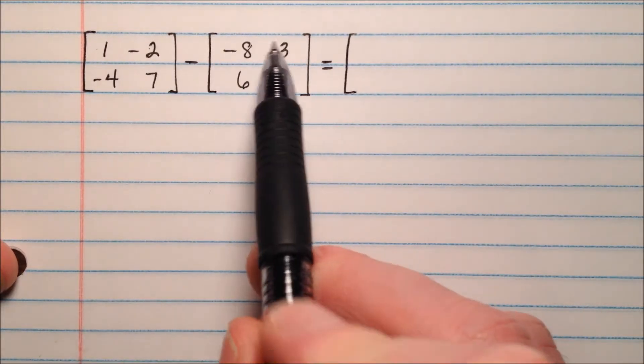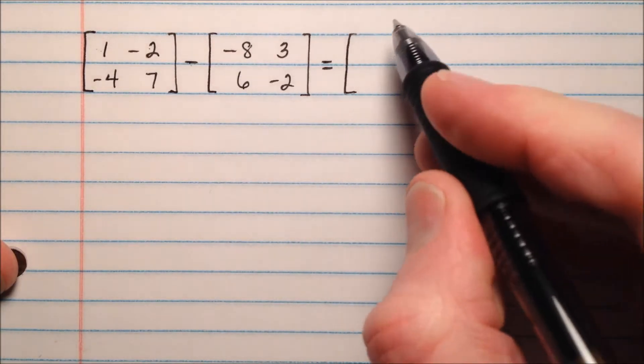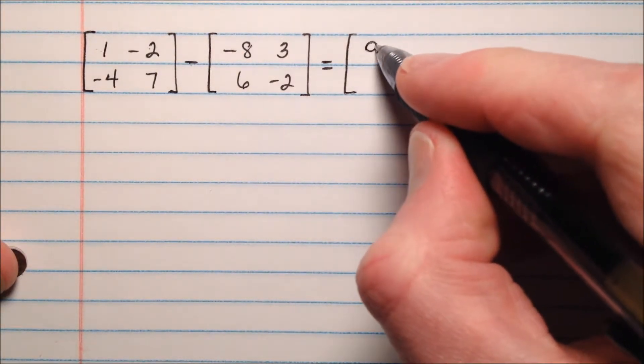First row, let's go across. 1 minus a negative 8 is going to be like 1 plus 8, so that's 9.